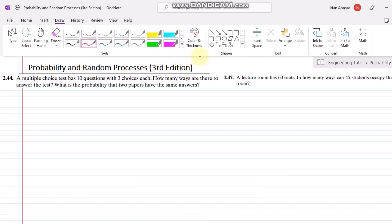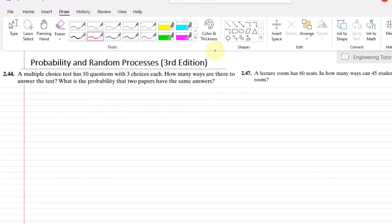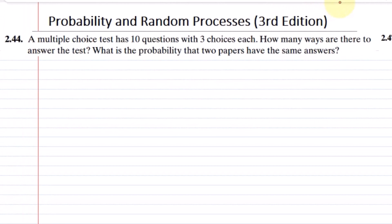Question 2.44 is: a multiple choice test has 10 questions with 3 choices each. How many ways are there to answer the test, and what is the probability that 2 papers have the same answer?